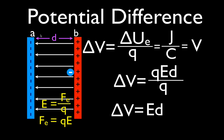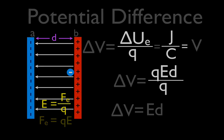Parallel plates are different because they have a uniform electric field. So we have these two parallel plates — one's positively charged, one's negatively charged — and we have a charge, some negatively charged object, an electron or some other negatively charged object, that we're going to be moving between those plates.